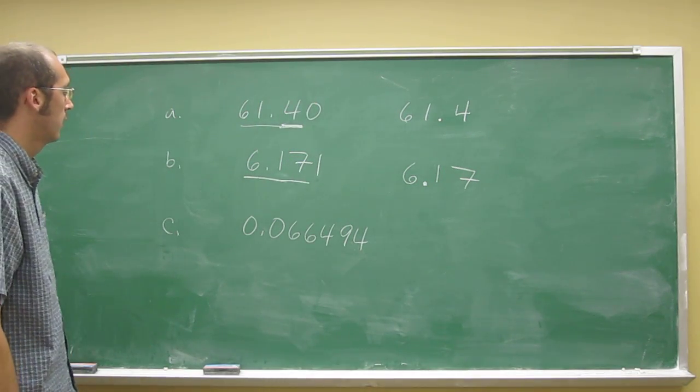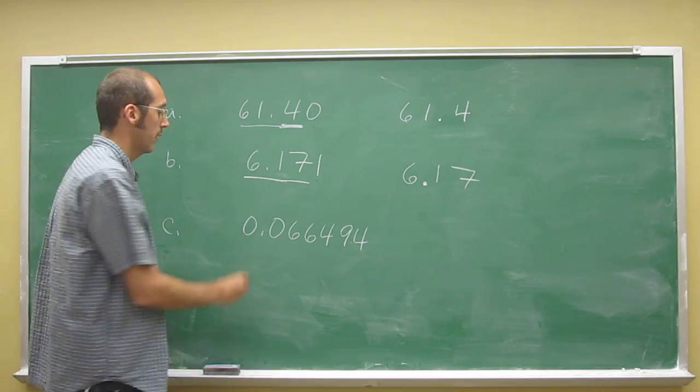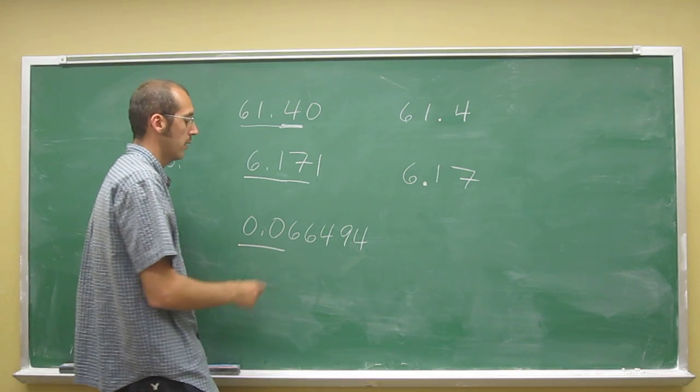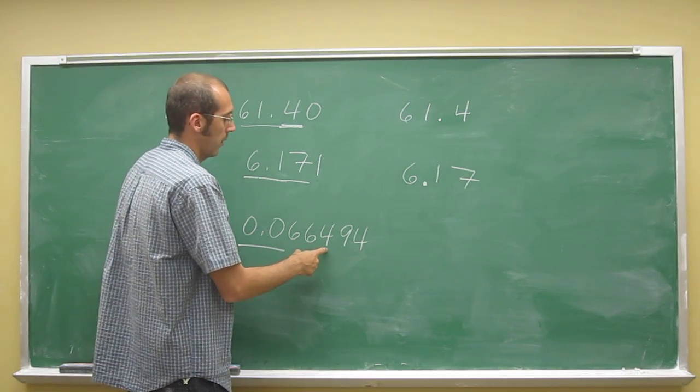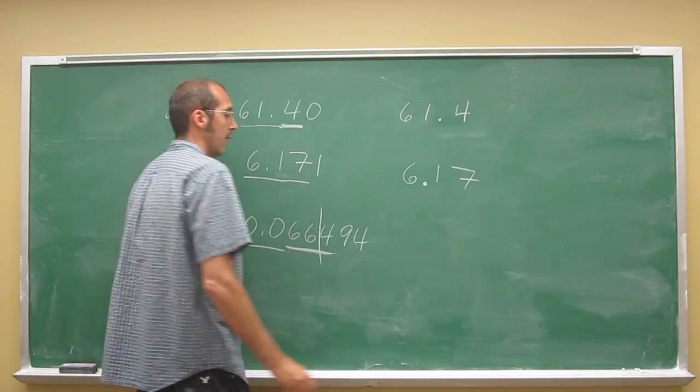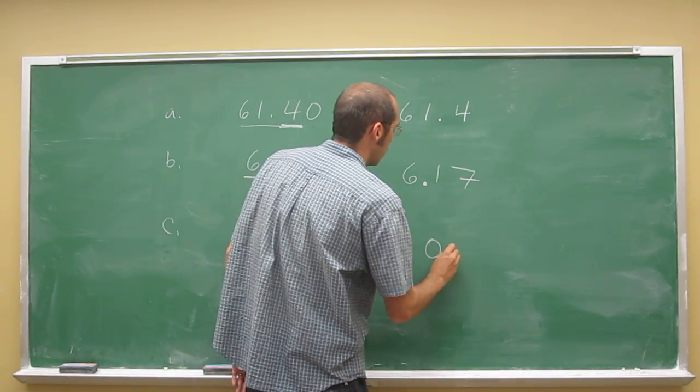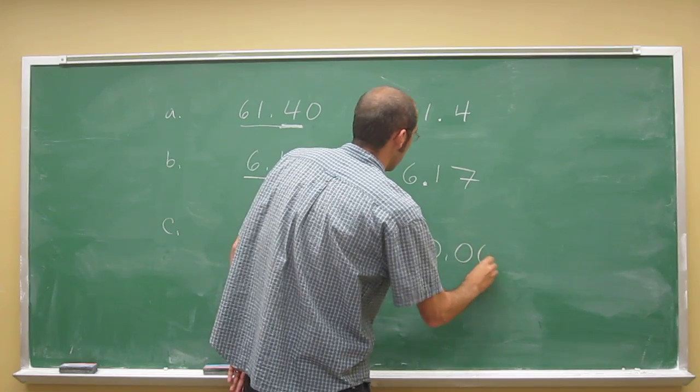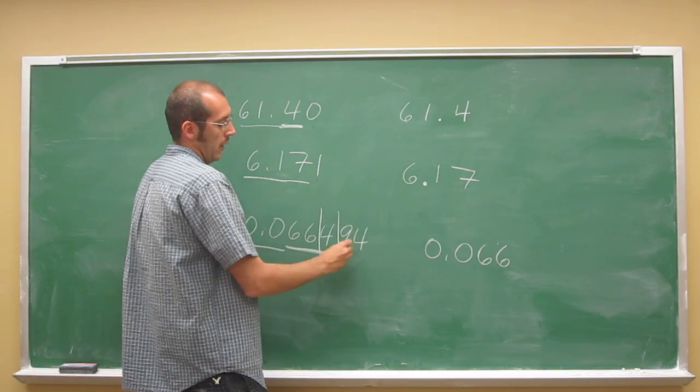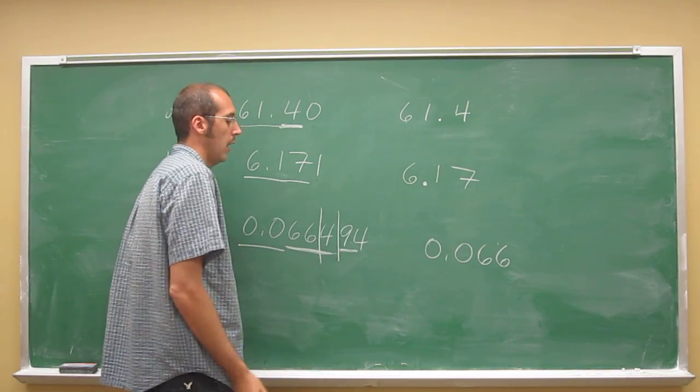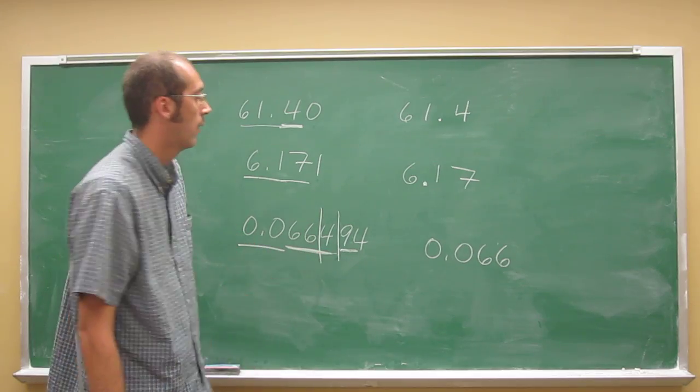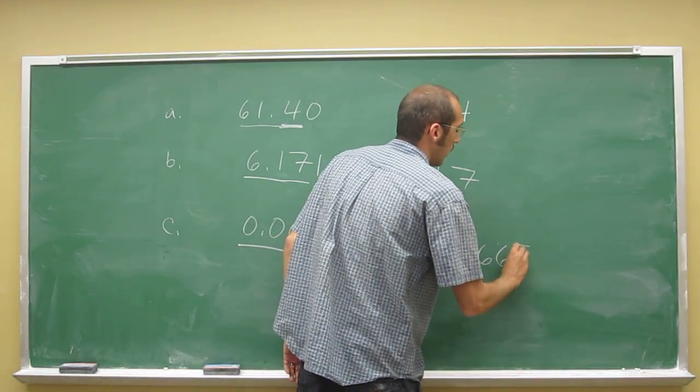And then remember, three sig figs. Are these significant? No, because they're leading zeros. So one, two, three - those three will all be examined. These two will definitely be in it. So let's draw this: 0.066. And then we have to ask ourselves, is this nine below five? And no, it's not, of course. So the four actually rounds up to a five.